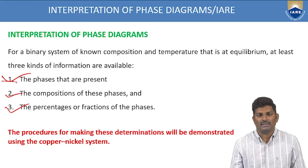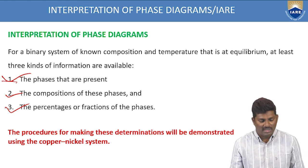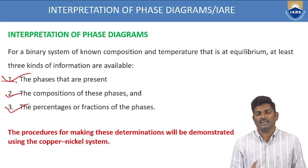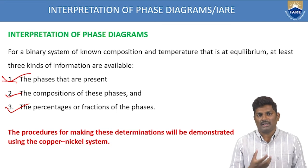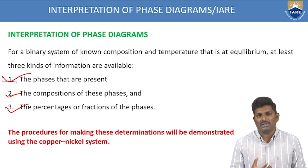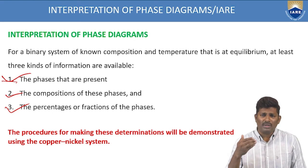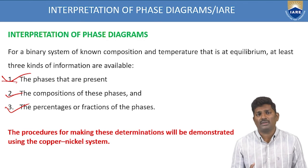If you want to interpret any phase diagram, these three parameters you have to consider: first, what type of phase is present; second, how much composition is there at a particular temperature; and third, you need to calculate the total percentage of fractions present in that phase with respect to temperature. We will see the procedures step by step using a copper and nickel system as an example.